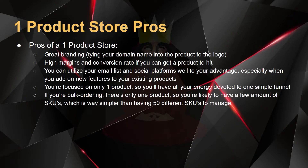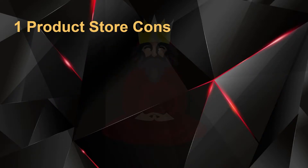If you're bulk ordering, there's only one product, so you're likely to have a few SKUs. SKUs are like variants and colors. This is way simpler than if you have a store with like 50 different SKUs to manage, like a clothing store or if you have 80 different products. So that's definitely the pros of a one product store.